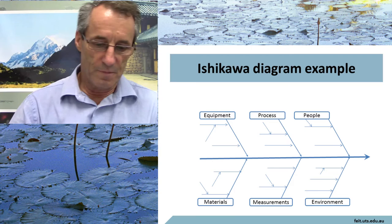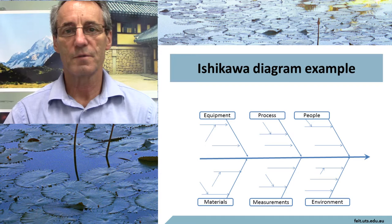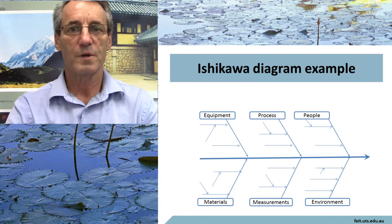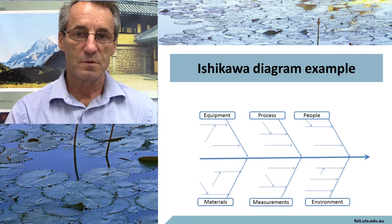Each branch of the Ishikawa diagram can itself become branched. So if you're looking at people, for example, you might look at were there enough people? Did they have adequate knowledge and skills? Were they adequately trained? Did they have adequate directions for this particular thing — so were there specifications they were working from, and were they adequate?